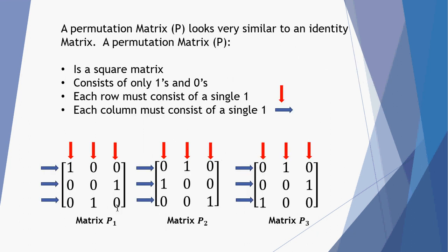A permutation matrix — I've got three examples here, permutation 1, 2, and 3. They're each square, they consist of only 1s and 0s, and the rule is that there must only be a single 1 in each one of the rows and in each one of the columns. The identifying feature of these three matrices is that each one has a single 1 in each row and a 1 in each column — never more than 1.